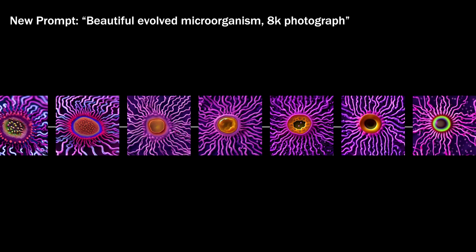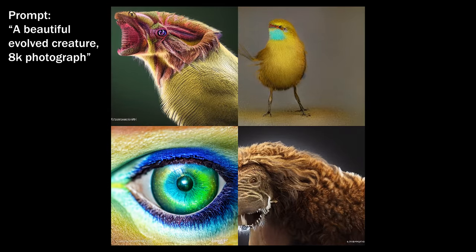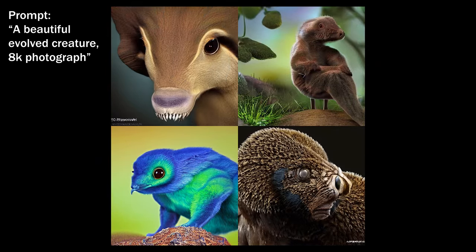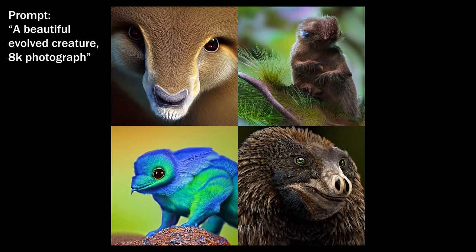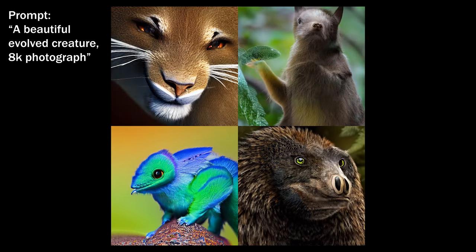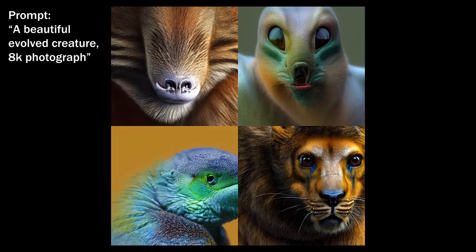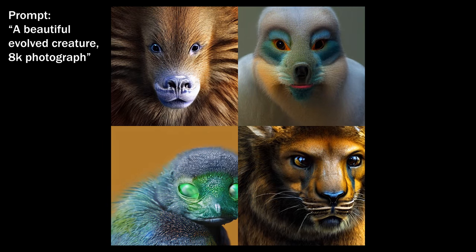And finally, I can just allow the model to run off on its own, without any human selection at all, resulting in a smooth video of evolution. This is a method called Interpolation, which I'll explain more later, and it essentially smoothly samples many possible images for a given prompt.